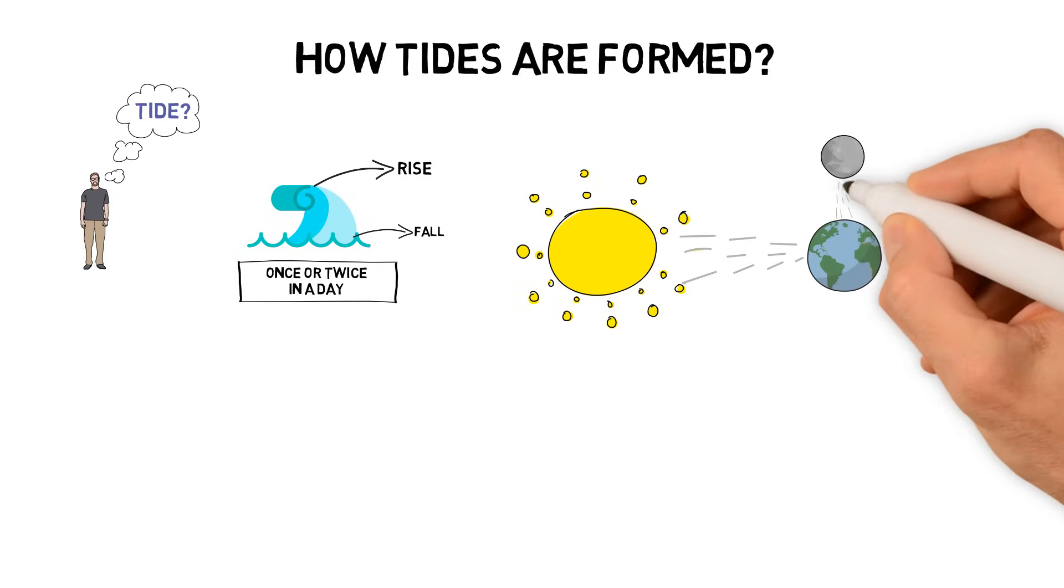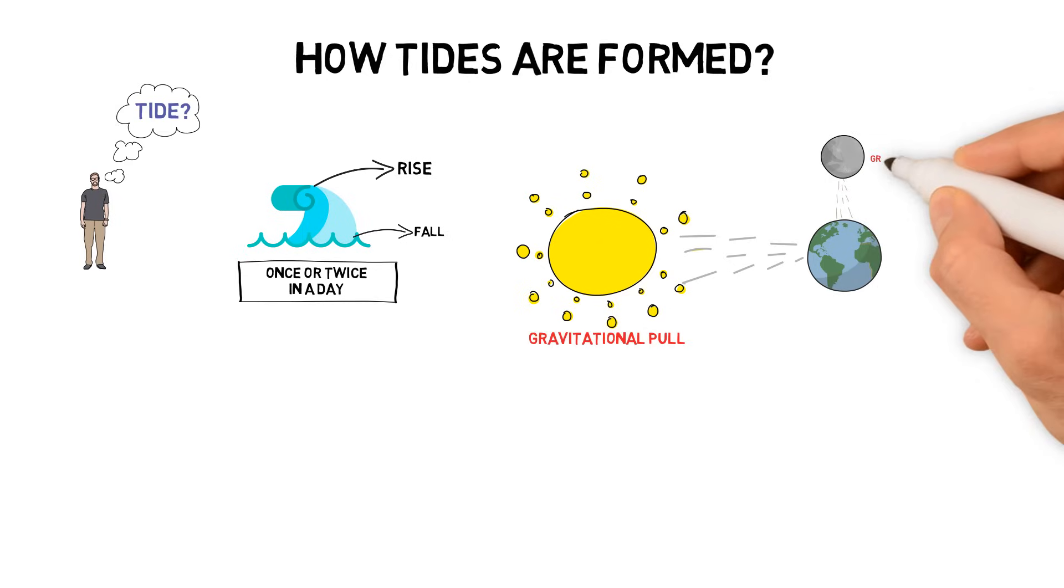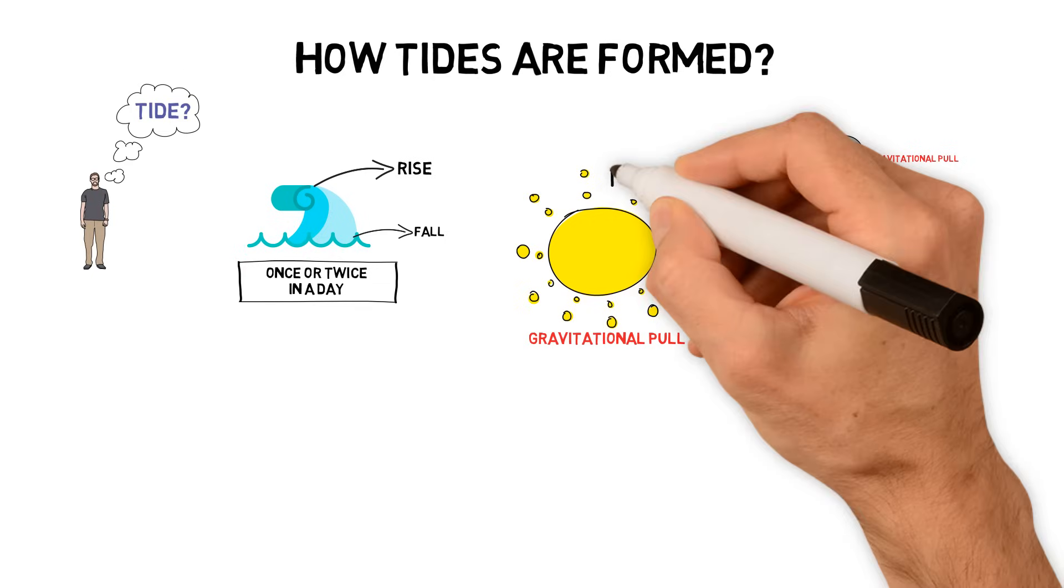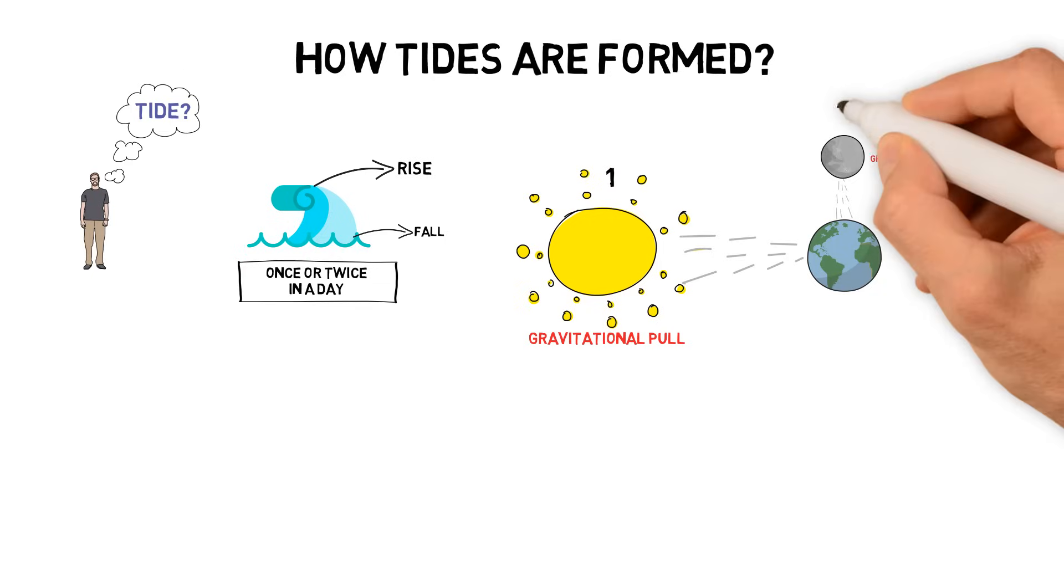Now I will explain how tides work. There are many factors that are involved in creating a tide. However, three of them are important. They are the sun, the moon, and the earth.